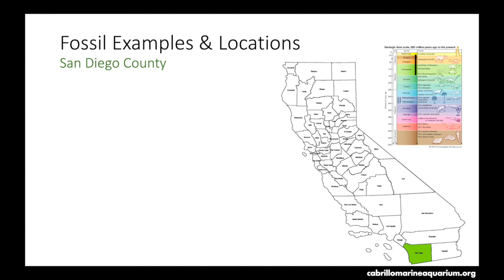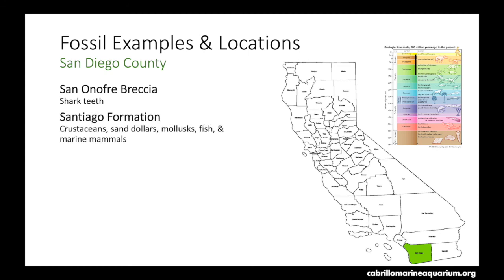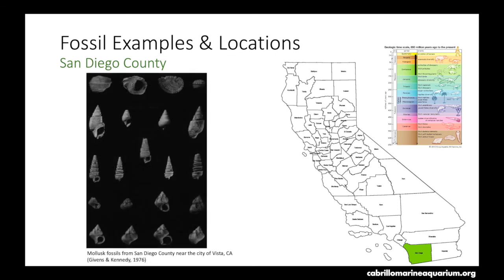Now let's move to San Diego County. Here we can find a similar age range to LA County — Cretaceous to Quaternary. Here you can find shark teeth within the San Onofre Breccia. You can find crustaceans, sand dollar, mollusk, fish, and marine mammal fossils within the Santiago Formation. And near Vista City you can find mollusks, corals, and bryozoans fossilized as well. Here are some examples of fossilized mollusks that you can find near the city of Vista in San Diego County.